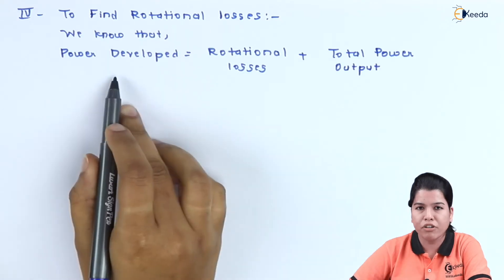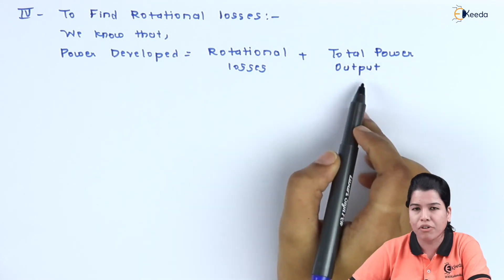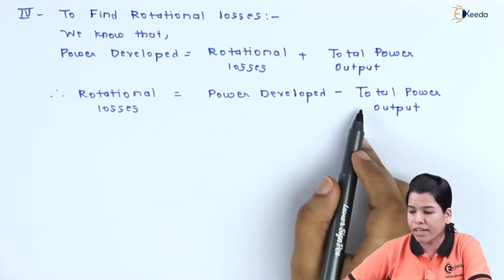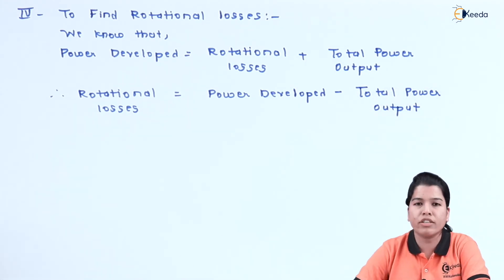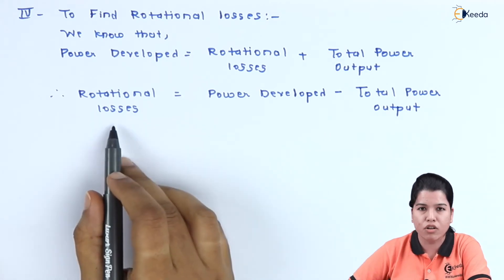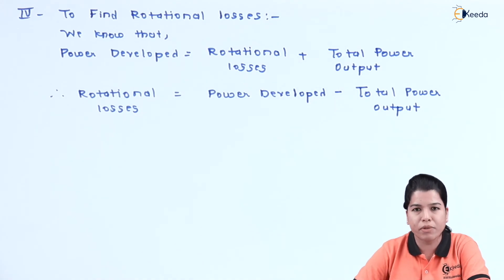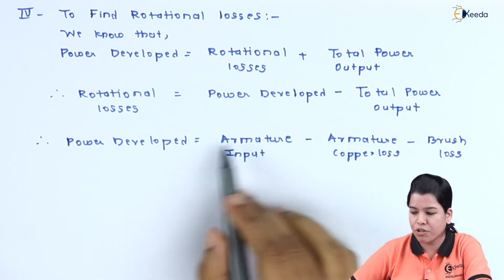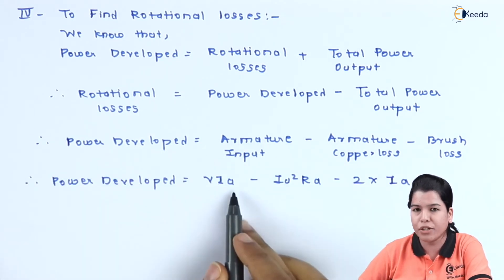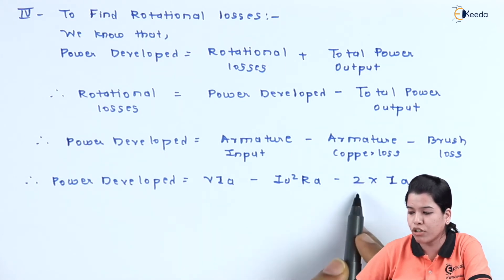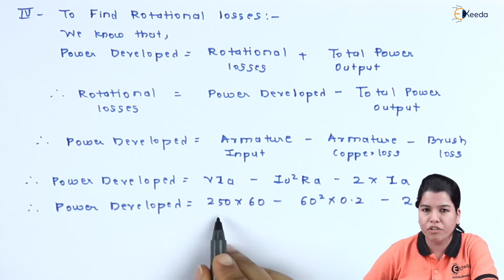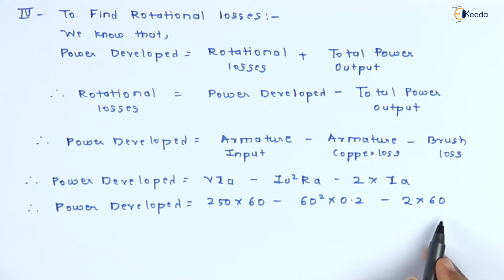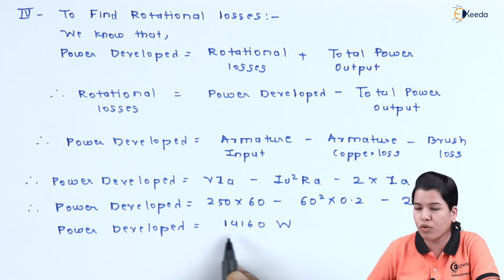Next, we find the rotational losses. We know: Power developed = rotational losses + total power output, so rotational losses = power developed - total power output. Power developed = armature input - armature copper loss - brush loss = V * I_a - I_a² * R_a - 2 * I_a = 250 * 60 - 60² * 0.2 - 2 * 60. Solving, power developed = 14160 W. Therefore, rotational losses = 14160 - 10000 = 4160 W.